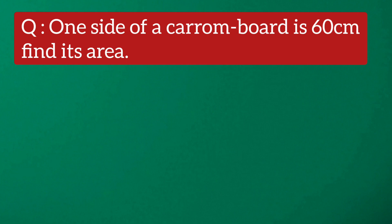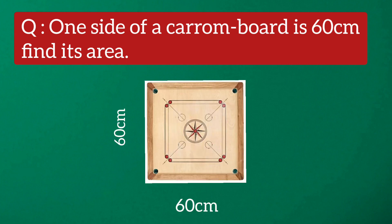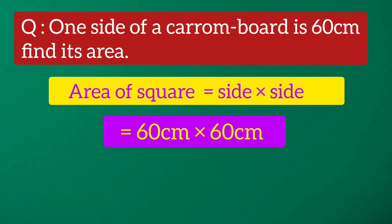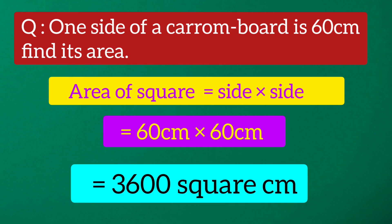Now let's solve a question related to area. One side of a carom board is 60 centimeters — find its area. The area of a square equals side into side. One side of the carom board is 60 centimeters, so 60 centimeters into 60 centimeters equals 3600 square centimeters.